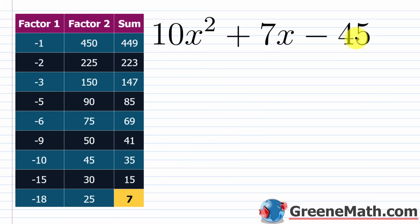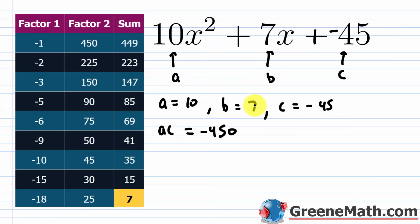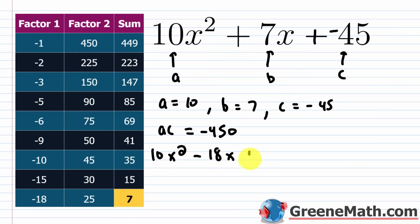Second example: 10x² + 7x − 45. Using the AC method: a = 10, b = 7, c = −45. So ac = 10 × (−45) = −450. We need two integers with product −450 and sum 7. Because the sum is positive and the product is negative, we need mixed signs with the larger absolute value positive: that's −18 and +25. Rewrite the middle term as −18x + 25x.